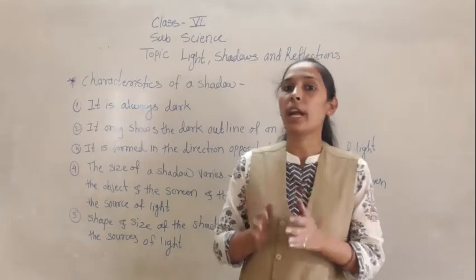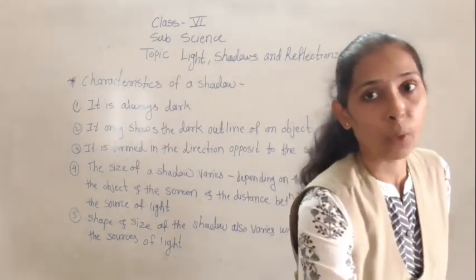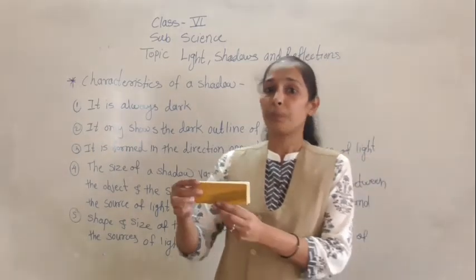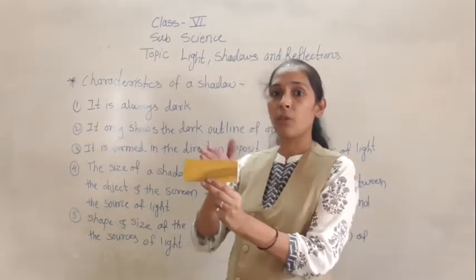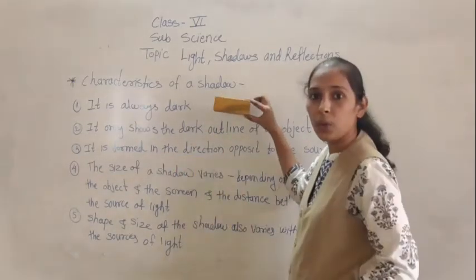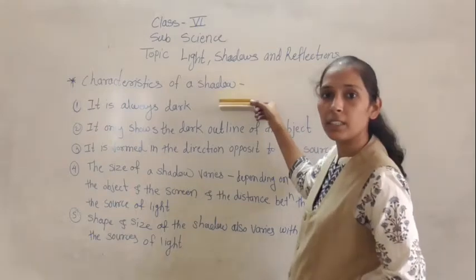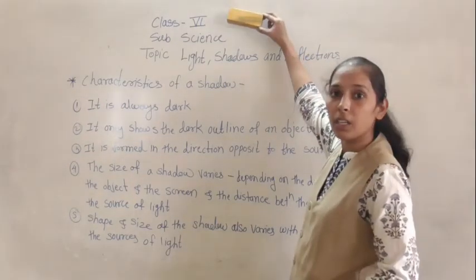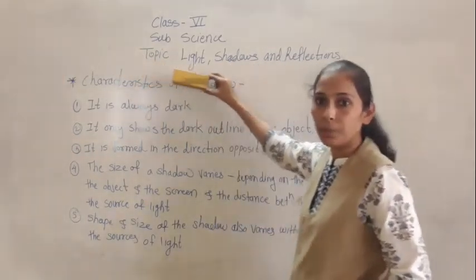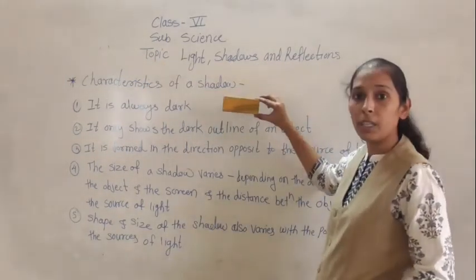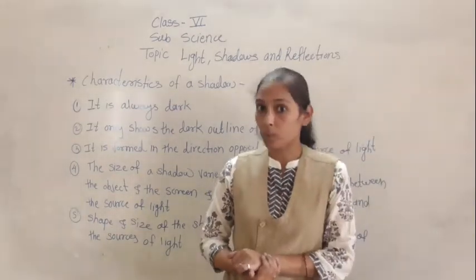And where does the shadow form? The shadow always forms behind the opaque object. So see here, this is a duster. The light rays will get stopped here, and you can see the shadow of the duster forming behind it. In this way, the shadow always forms on the backside of the opaque object.